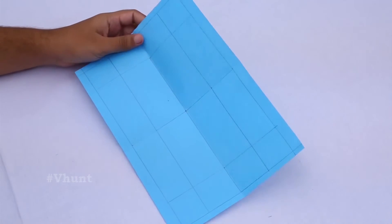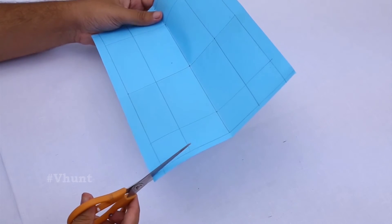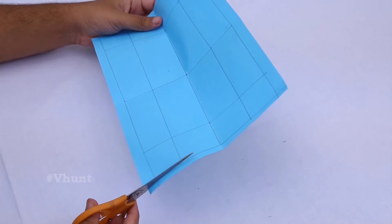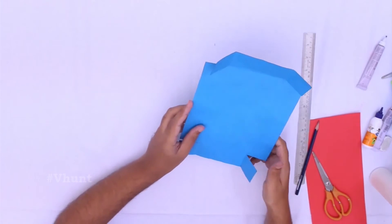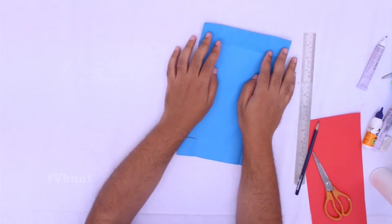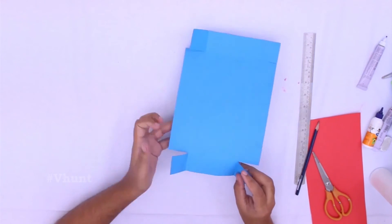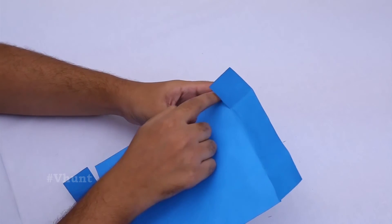Then remove the excess part using scissors and cut the corners of the paper so it looks like a square.